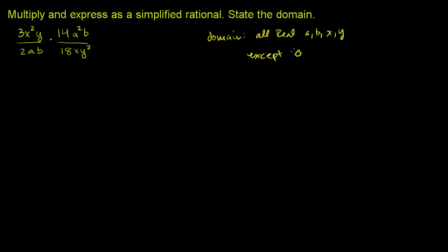Or we could be specific, except a, b, x, and y can't equal 0. Or you could write this: given that a, b, x, and y does not equal 0, that none of them can be equal to 0. These are just multiple ways of stating the same thing.